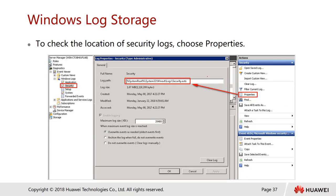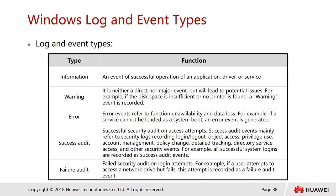We can also view and change log settings. Right-clicking the security log and selecting Properties shows the file location. We can set the maximum log size and configure what happens when the maximum size is reached — whether to override old events or not. Windows log event types include: Information, Warning, Error, Successful Audit, and Failed Audit.